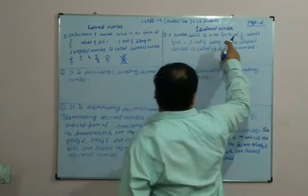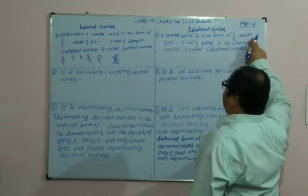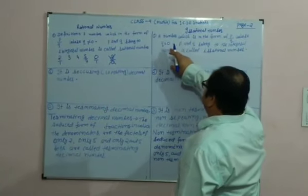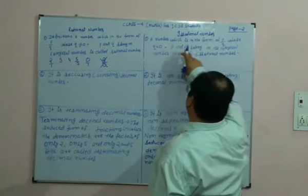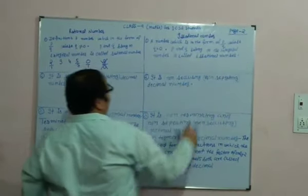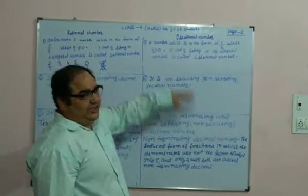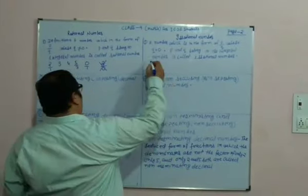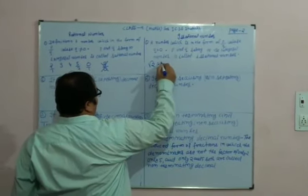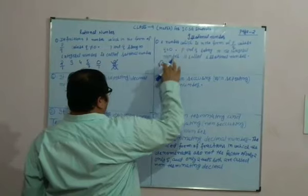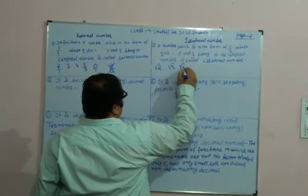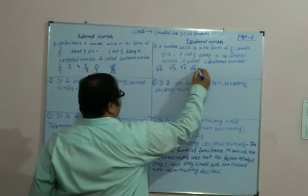Similarly, a number that cannot be expressed in the form of P/Q — where P and Q belong to the integers — is called an irrational number. Examples include root 2, root 3, root 5, root 6, and so on.